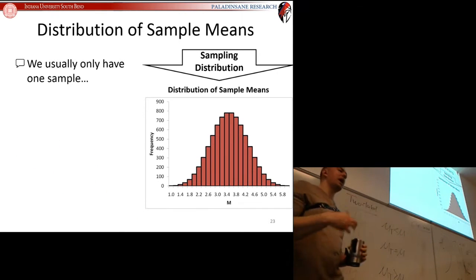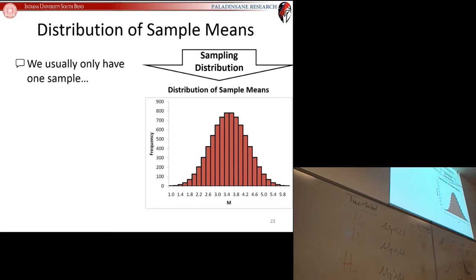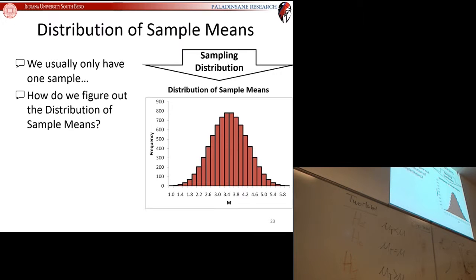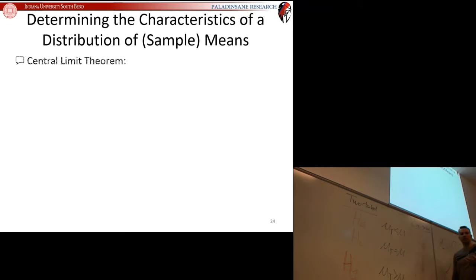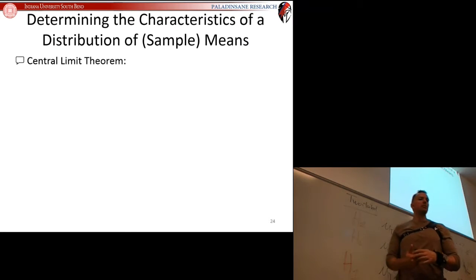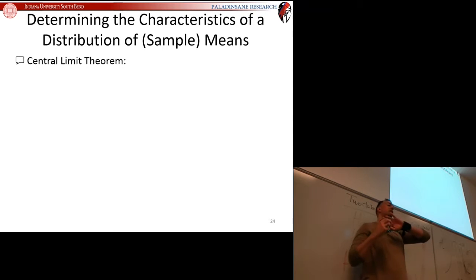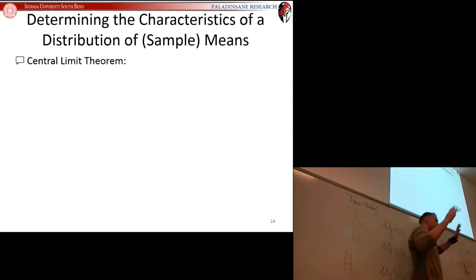Typically we only have one sample in a study, so we can't build a distribution of sample means by testing sample after sample. So how do we find the mean and standard deviation of the comparison distribution? It has to do with the central limit theorem—that proven bit of mathematical magic that links a population to its distribution of sample means.